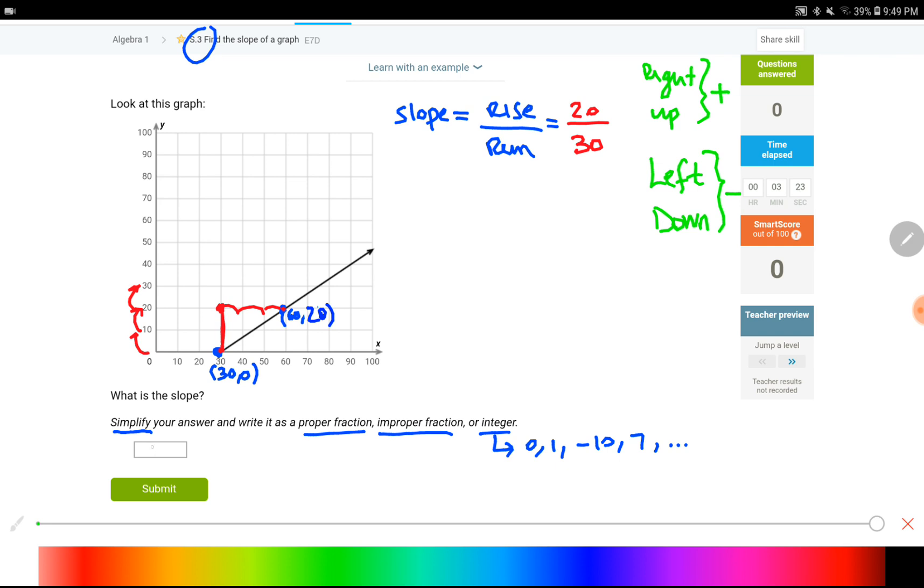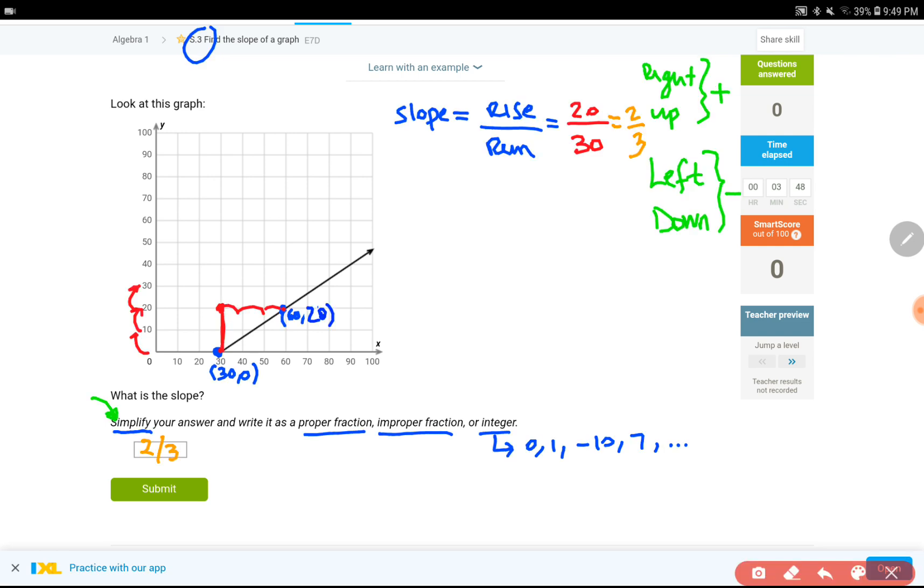Also, one last thing. If you put 20 over 30 over here as your final answer, that's going to be wrong. You're not going to get any points for this question, because it says simplify your answer. So here is how you simplify. If you can divide both of these two numbers by another number, such as 10, your answer would be 2 over 3, which would be the final answer. Let's move on to the next one and see what type of question that one is.